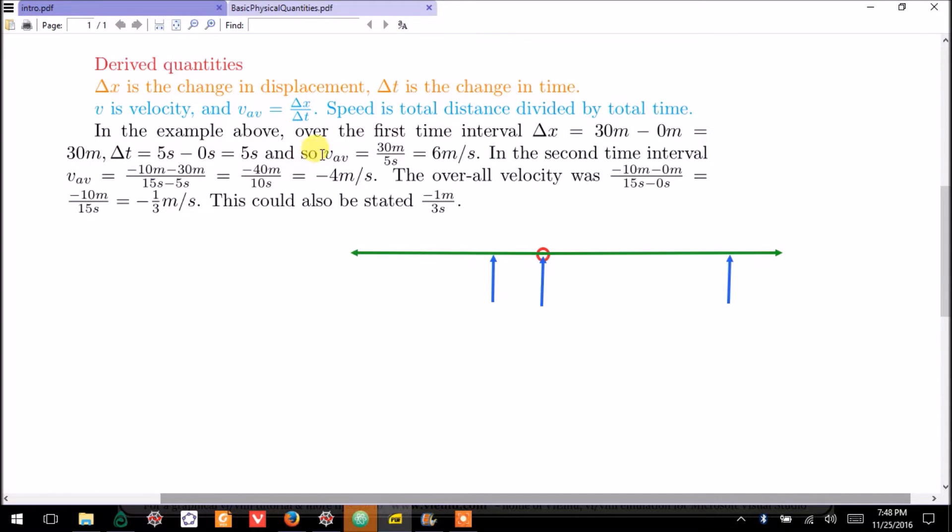We use these to define the average velocity over a time period, which is the delta x over delta t. And in this example, that came out to 6 meters per second. So notice that it is measured in meters per second, distance or displacement units divided by time units.